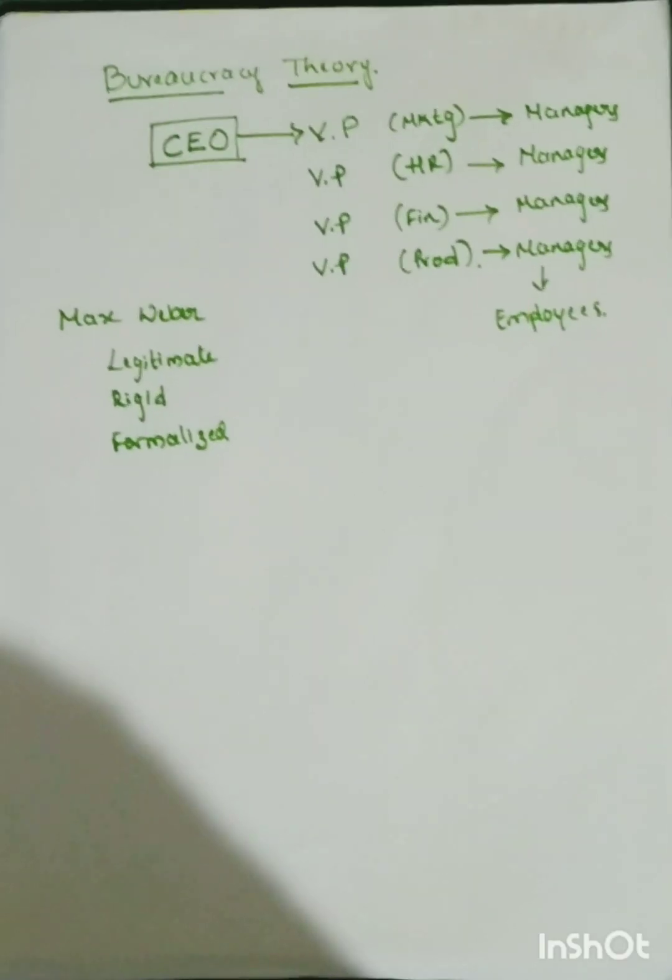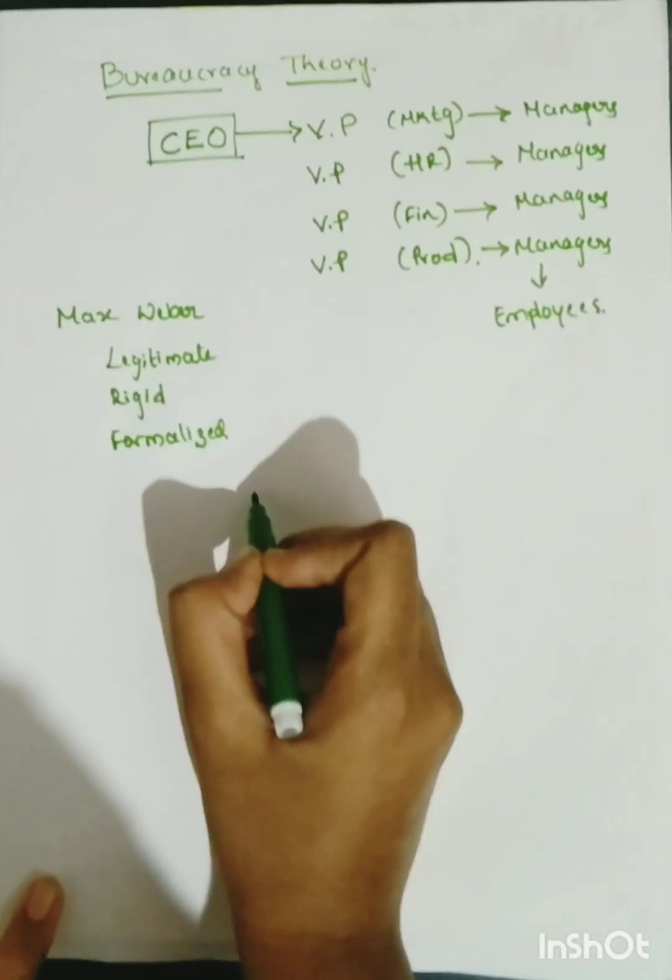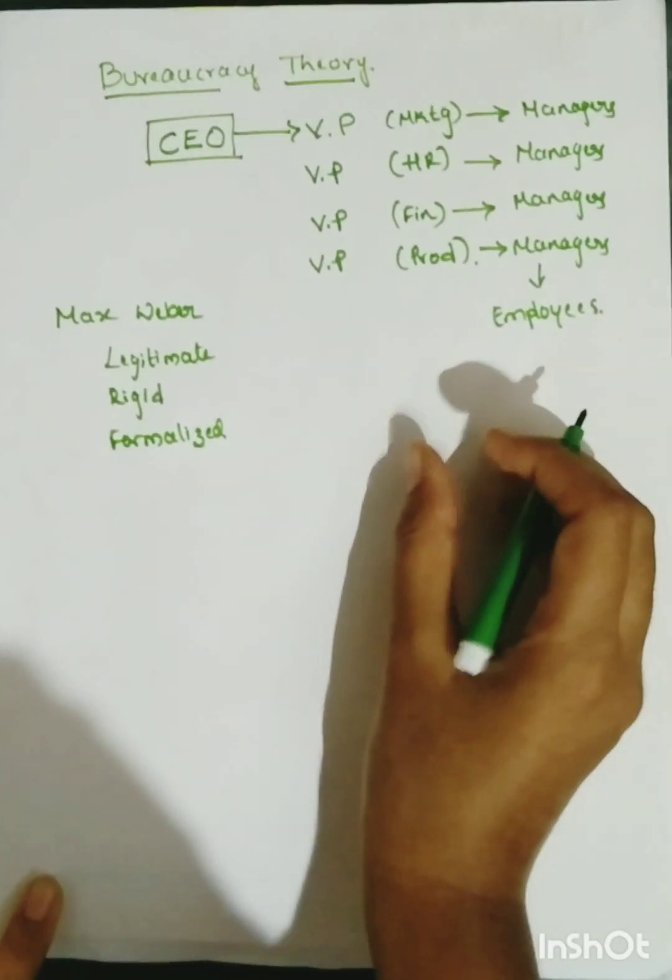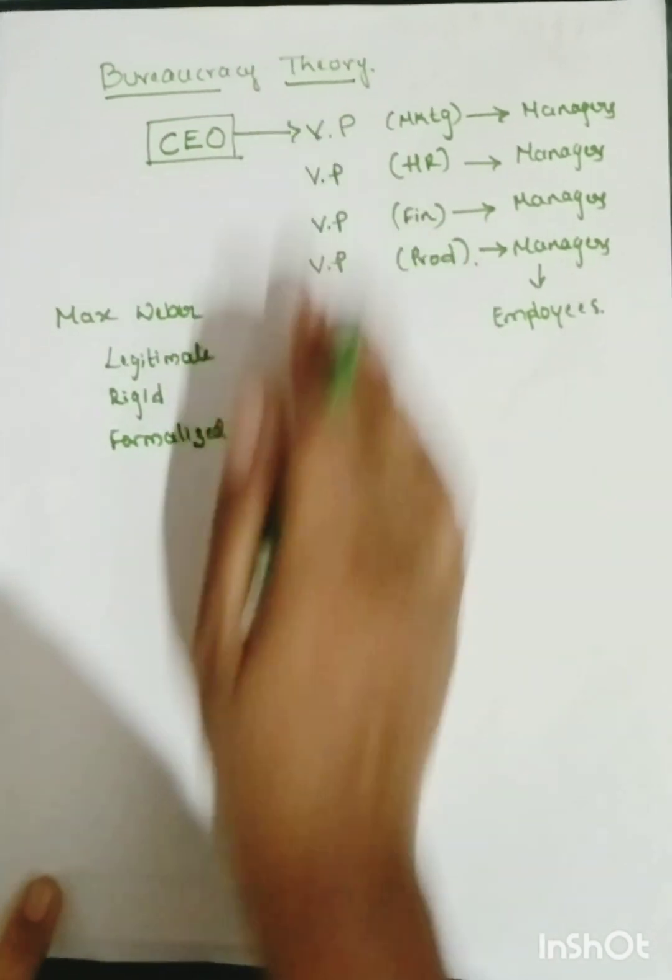So these three words explain how an organization should be under bureaucratic theory.